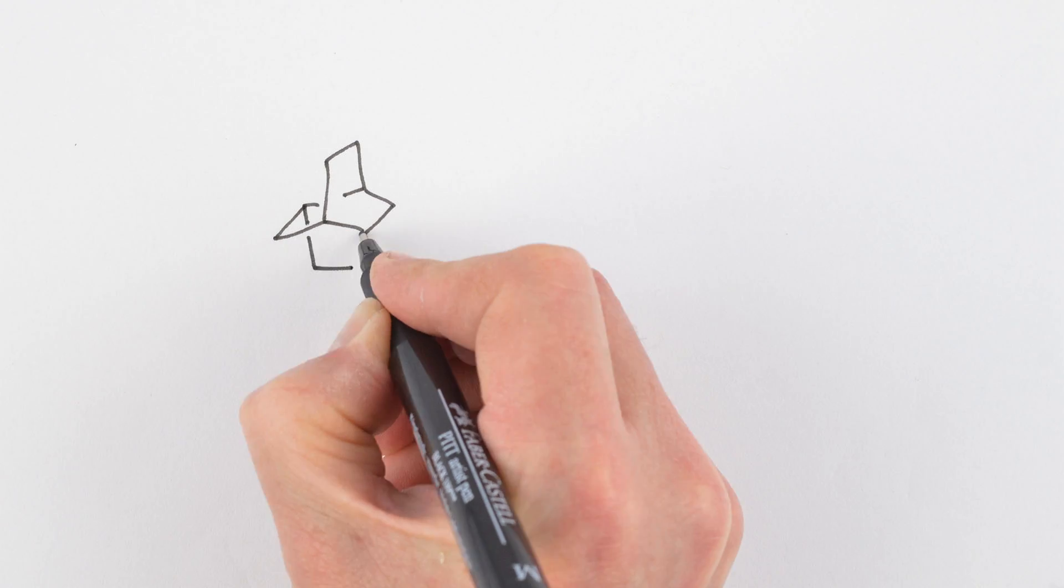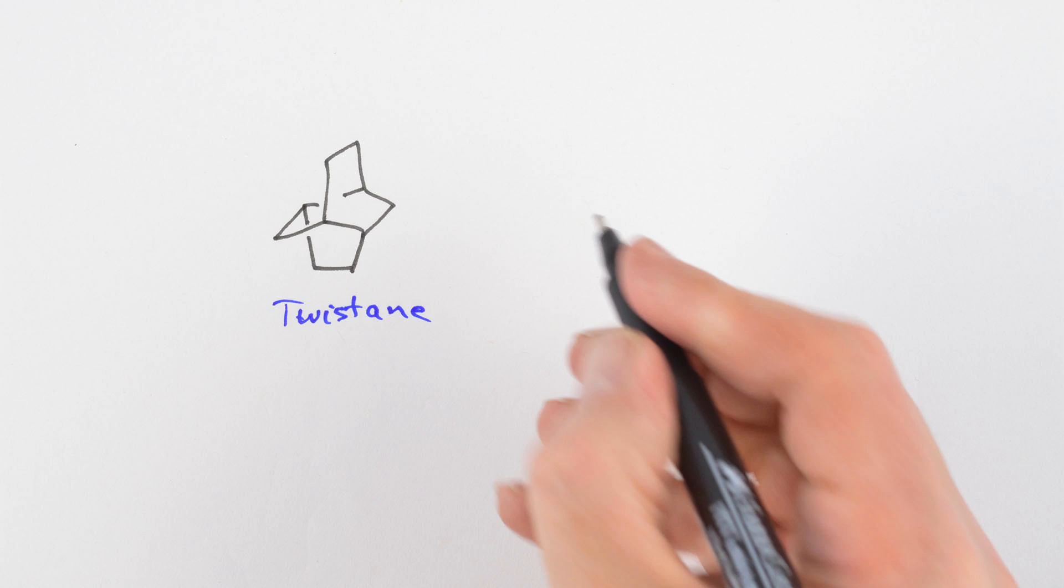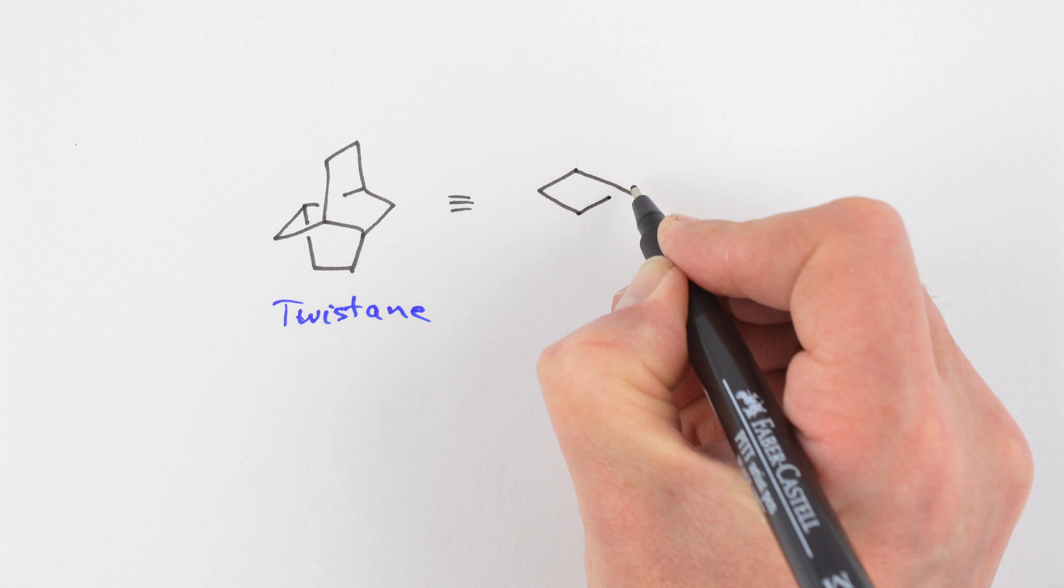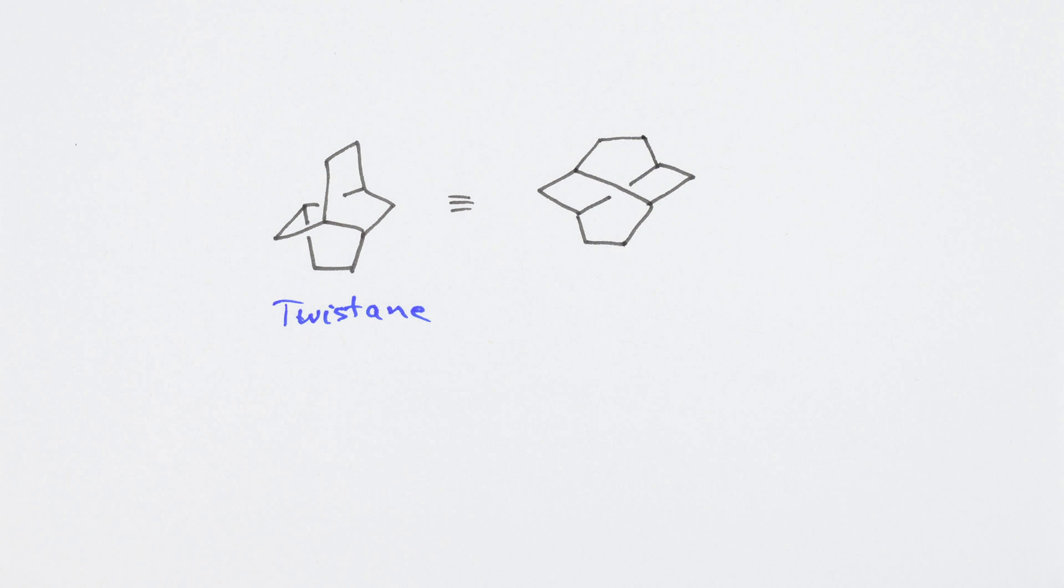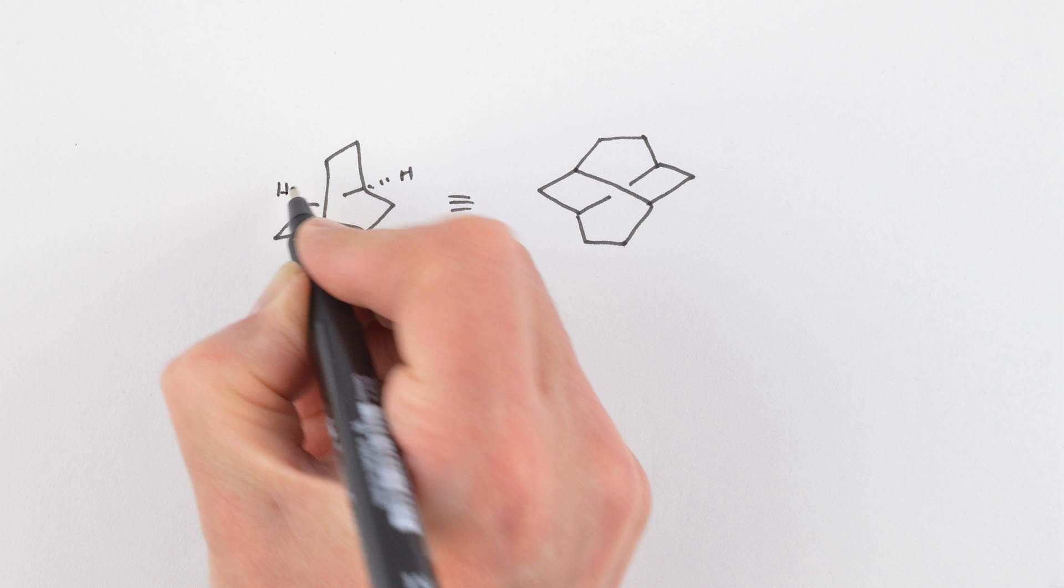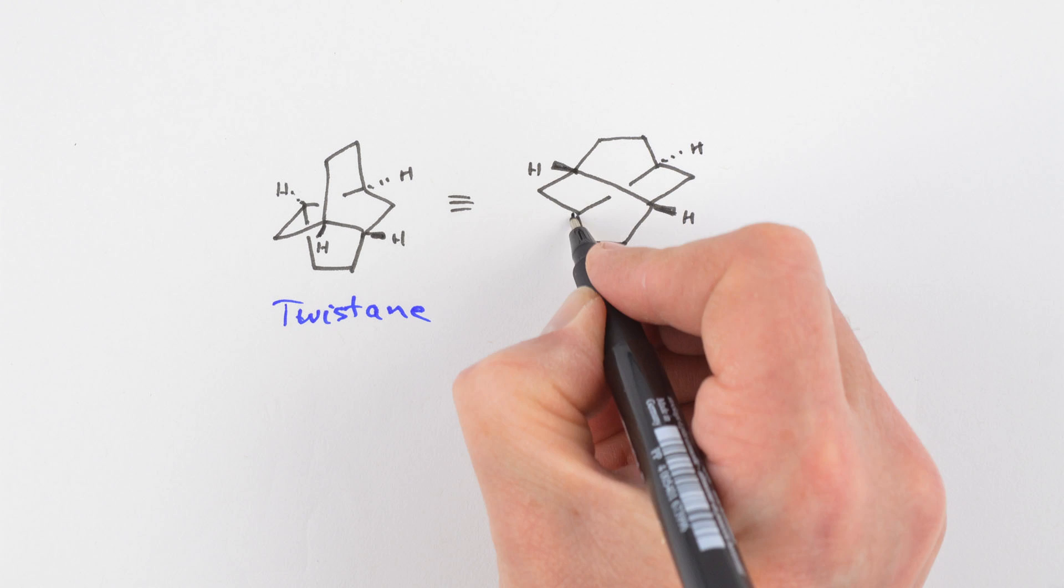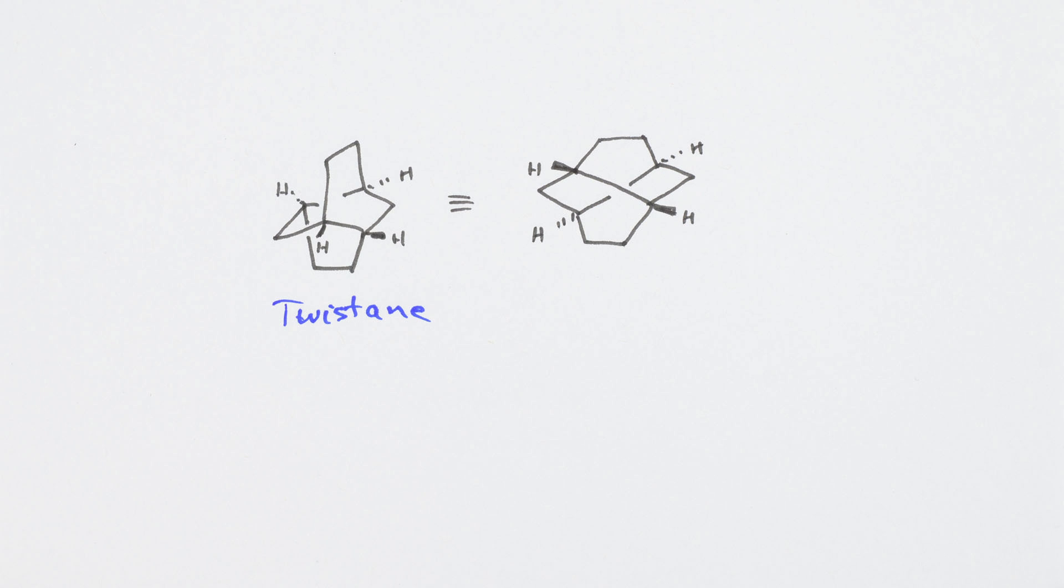Our target molecule is a simple hydrocarbon with a trivial name twistane. We show two ways to draw twistane because how we view any target structure, or from what orientation we view the molecule, greatly influences what disconnections we see.